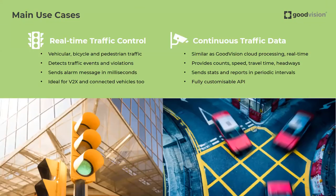There are basically two main use cases that this product covers — two main functions. The first function is the real-time detection of traffic events of what is happening under the camera. The second one is the ability to continuously and permanently collect the data. Good Vision Live Traffic provides you with just-in-time data that your system can act upon.